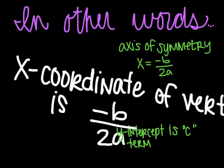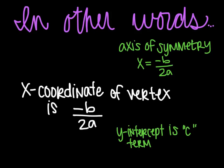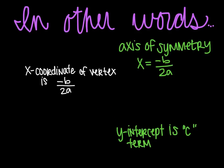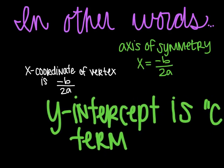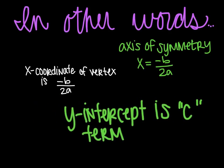The x-coordinate of the vertex is the opposite of b over 2a. Obviously, that's true because the axis of symmetry is found at the vertex. And so when you find the opposite of b over 2a, you are finding, in fact, that x-coordinate. And last but not least, the y-intercept is, in fact, your c term.